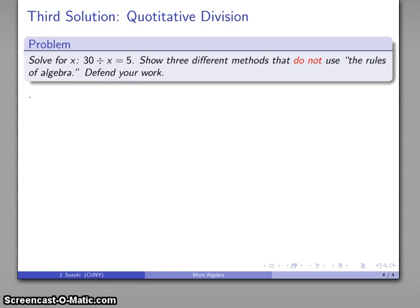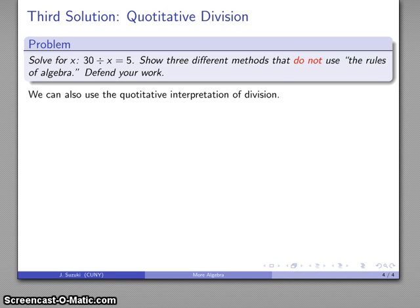Let's see how that works out. By our quotative interpretation, 30 divided by x equals 5 means I've taken 30, broken off pieces of some size—don't know what it is—but I do know I've broken 30 into five pieces of that particular size.